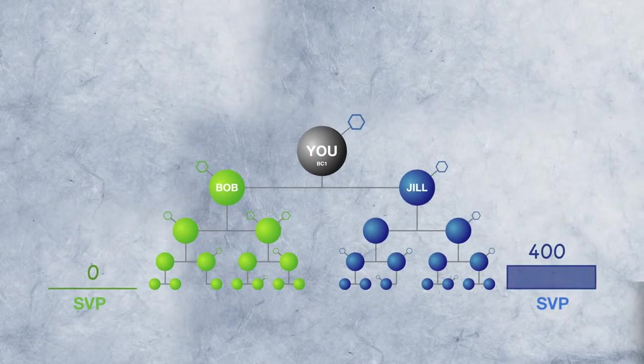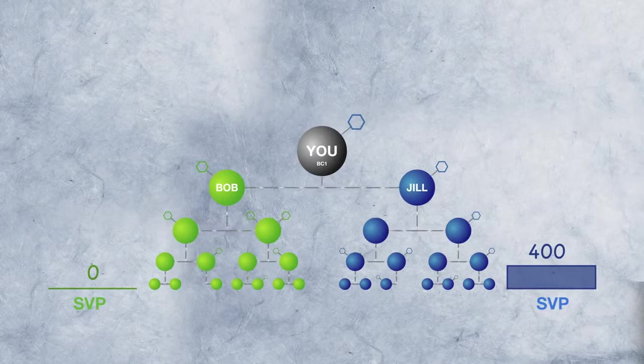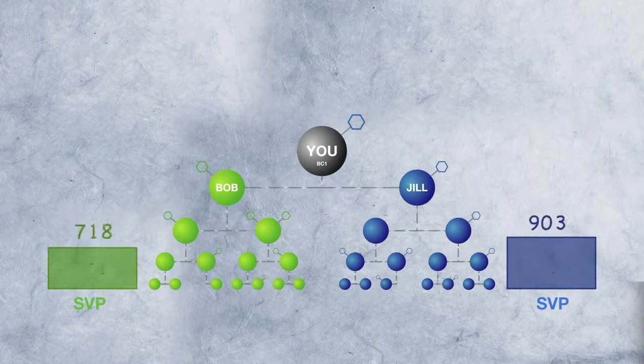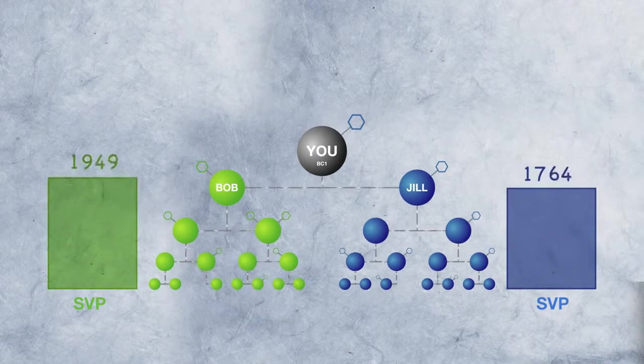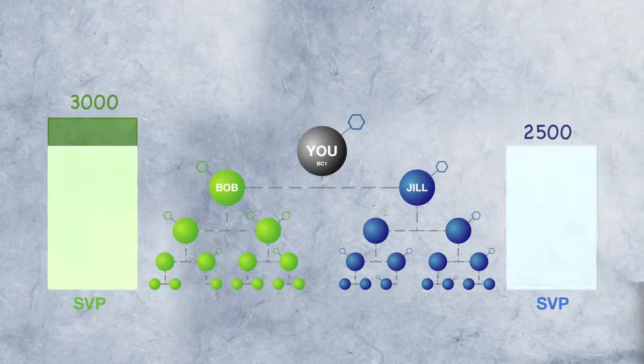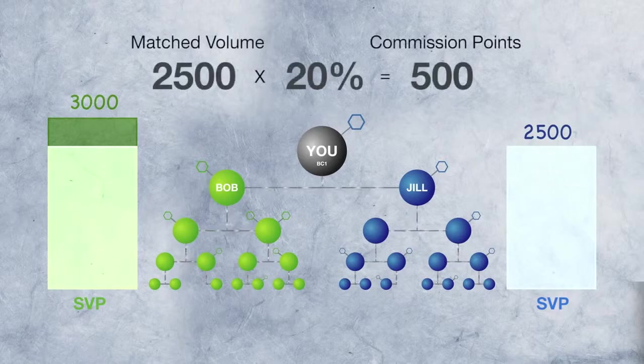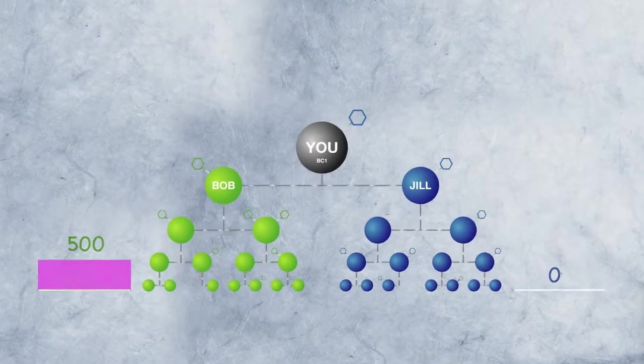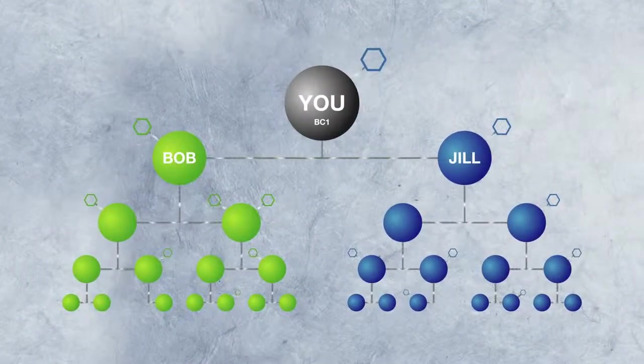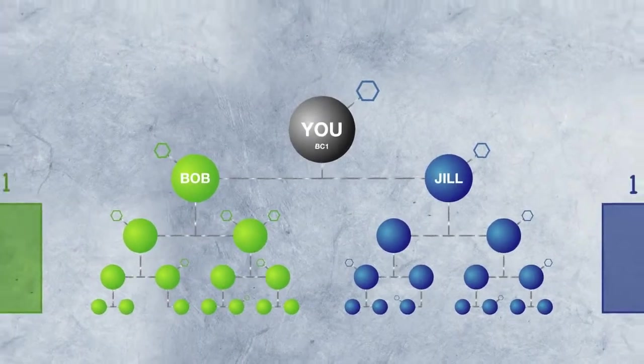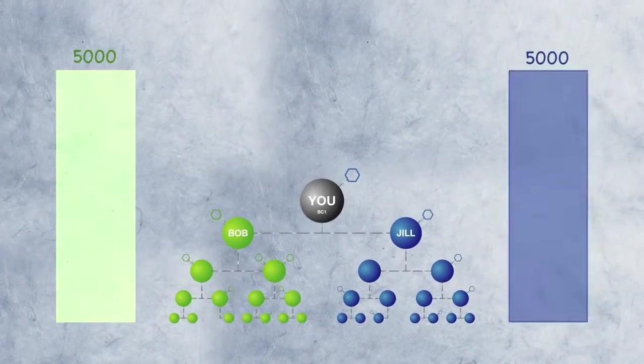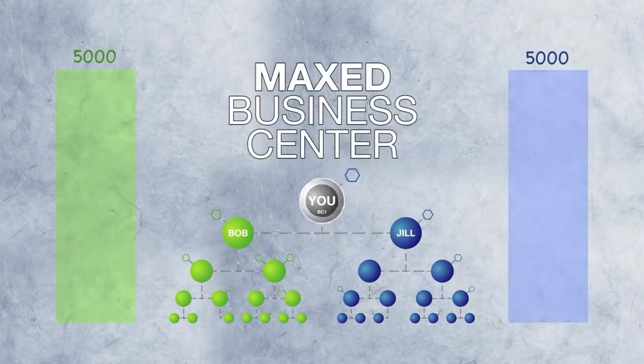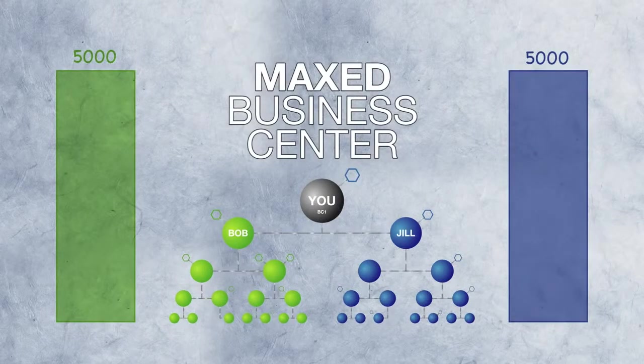In this case, the next week your right side would start out with 400 sales volume points. Additional volume is added on top. So at the end of the week, if you had 3,000 left and 2,500 right, you'd earn 20% of 2,500, or a 500 point commission. But this is just the beginning. When you reach 5,000 points on your left and 5,000 on your right, you have maxed your business center and you are rewarded with another business center.